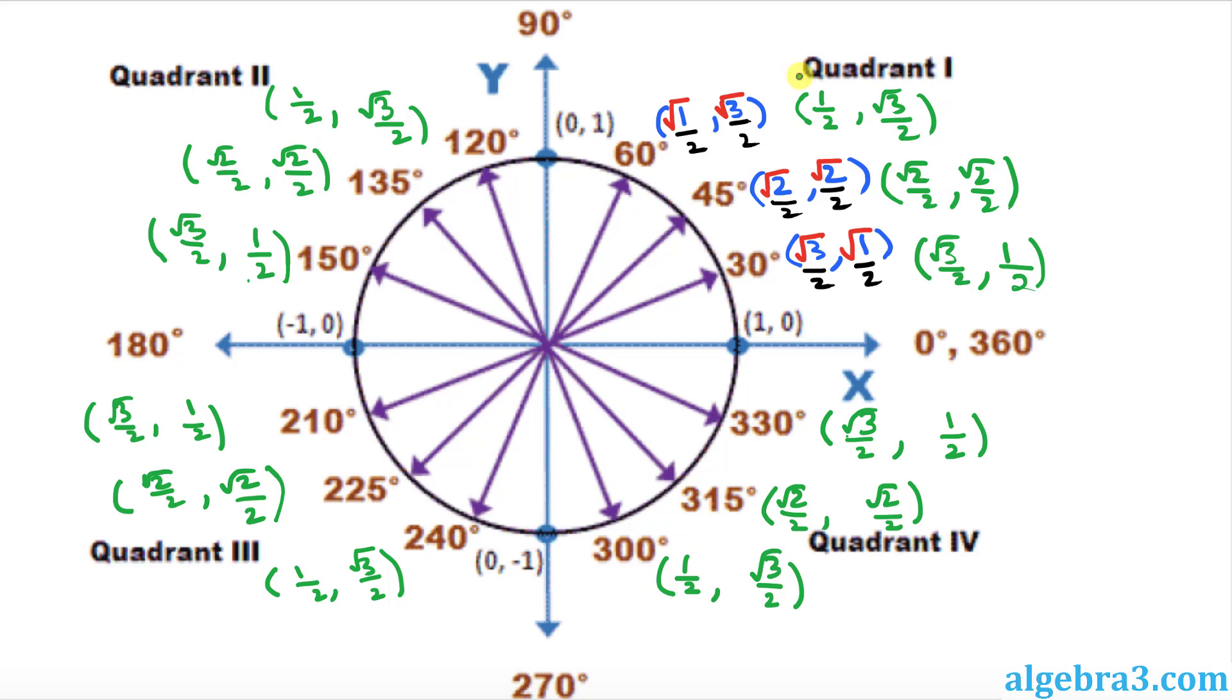Right now, whatever I put over here for 60 degrees, 1 over 2 comma square root of 3 over 2, I just put the same thing over here. There is no gimmick whatsoever. The next thing you have to be careful about is we are in the first quadrant where we have x comma y. When we go in the second quadrant, x becomes negative, so it becomes negative x comma y. That means all these first numbers in this ordered pair must be negative.